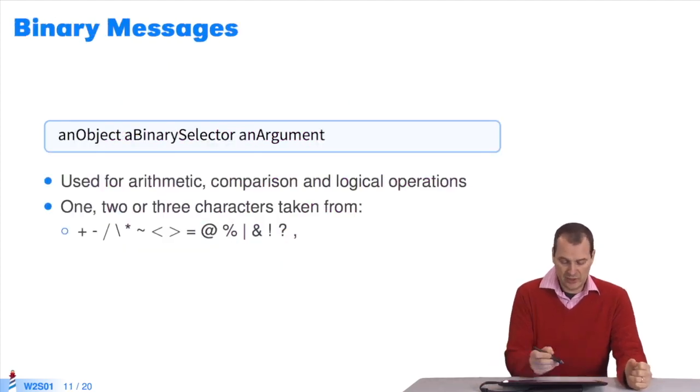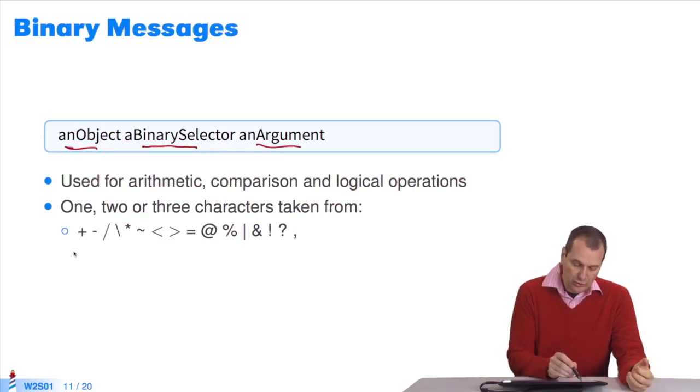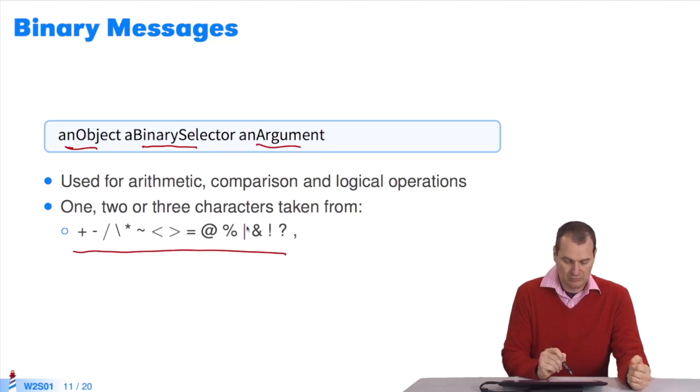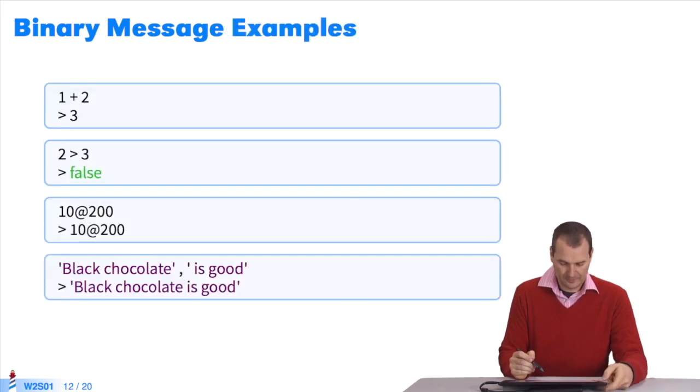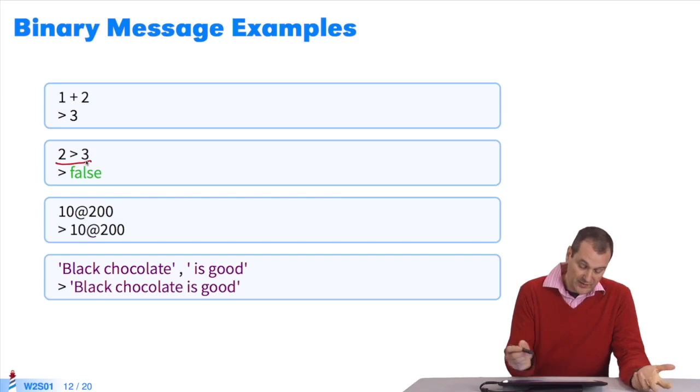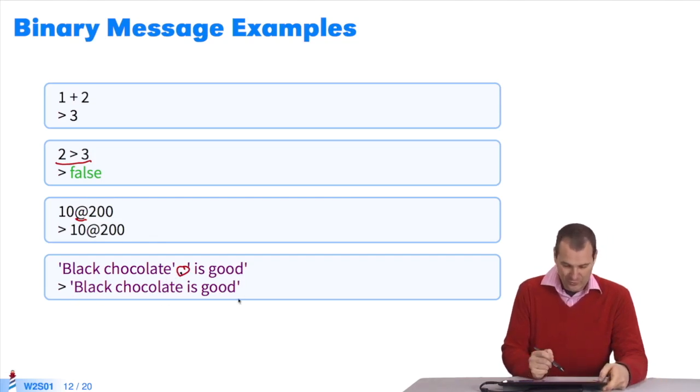Back to the subject at hand. There are binary messages. They are composed of an object, a binary selector, an argument. Binary selectors are a combination of these incomprehensible things like percent or pipe. What can't be understood is binary. What looks like math is binary. For instance, I send the message plus to the object one with the object two as argument. It returns three. Greater than is a binary message. At is also a binary message. String concatenation with a comma is a binary message. I write black chocolate is good.